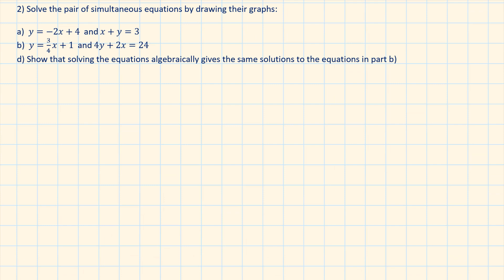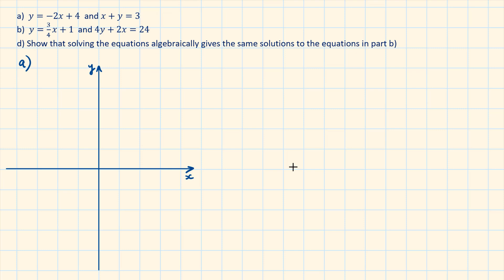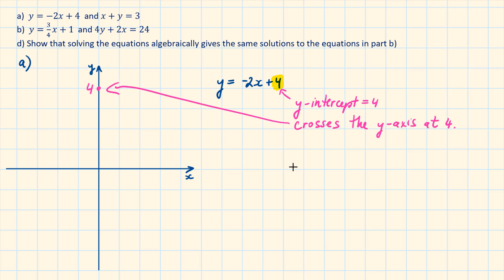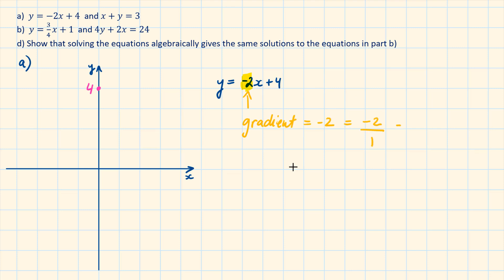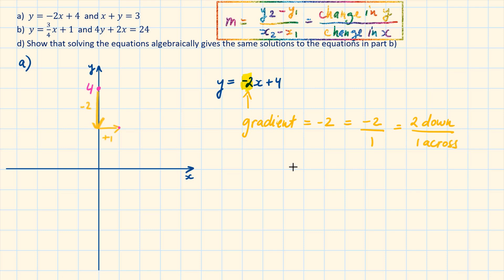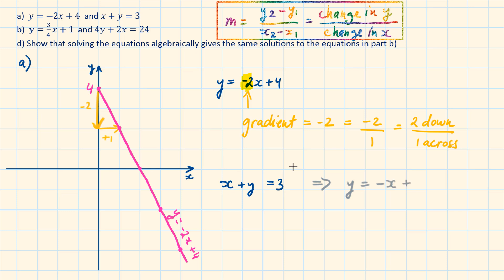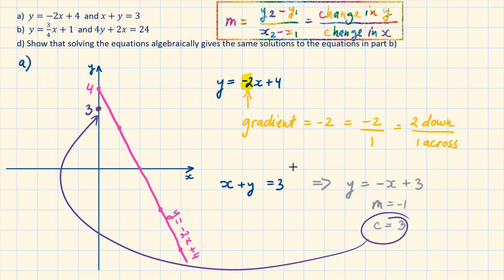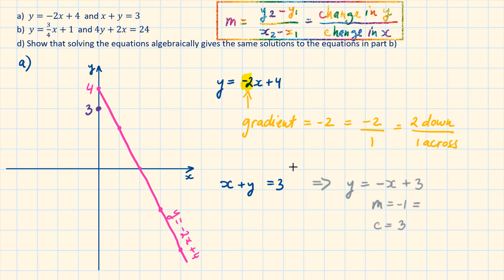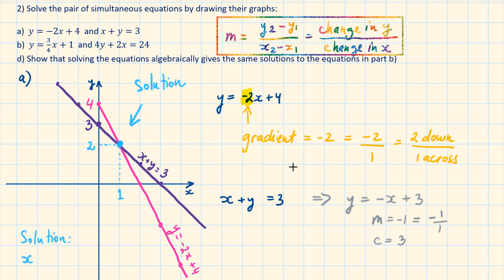Question 2: Solve the pair of simultaneous equations by drawing their graphs. Part a: y equals minus 2x plus 4, and x plus y equals 3. We start by plotting the y-intercept at 4, where it crosses the y-axis. The gradient is minus 2, written as minus 2 over 1 — 2 down and 1 across from the plotted point. For x plus y equals 3, rearranging gives gradient minus 1 and y-intercept 3. Plot that, then draw gradient: one down and one across. The solution where the two lines cross is x equals 1, y equals 2.